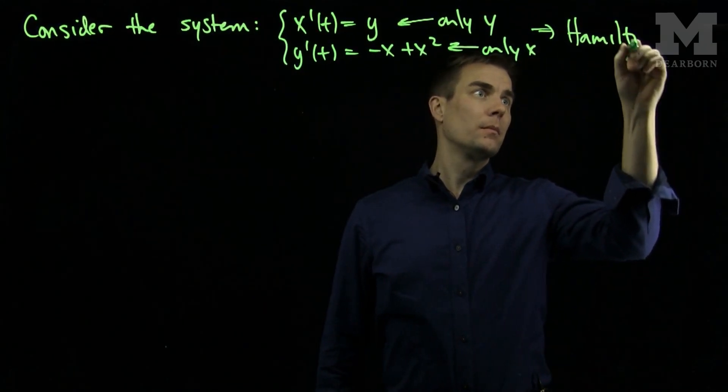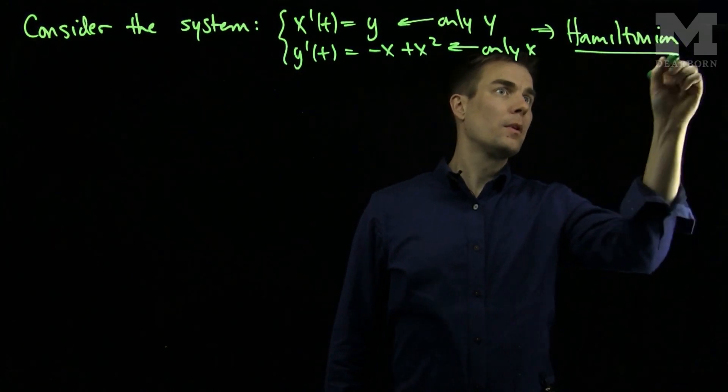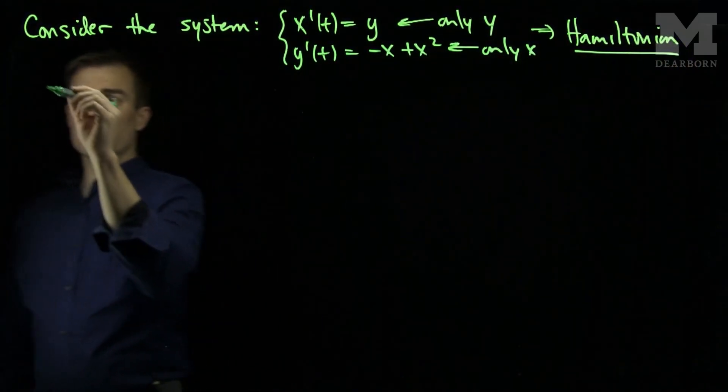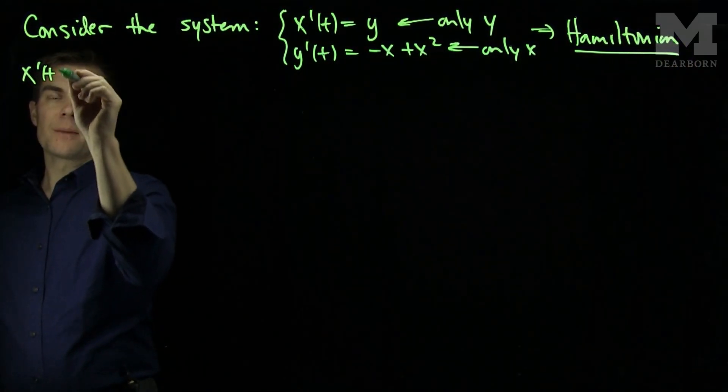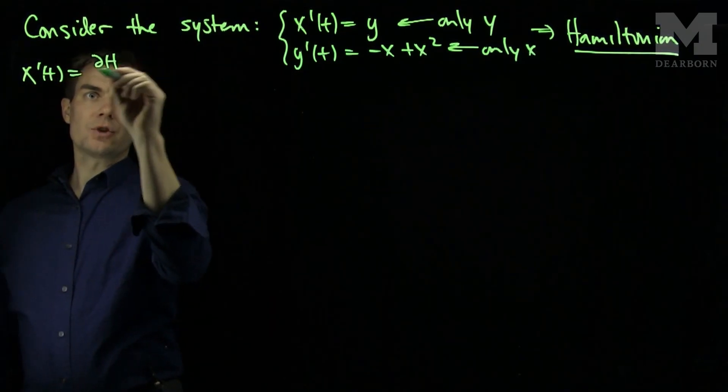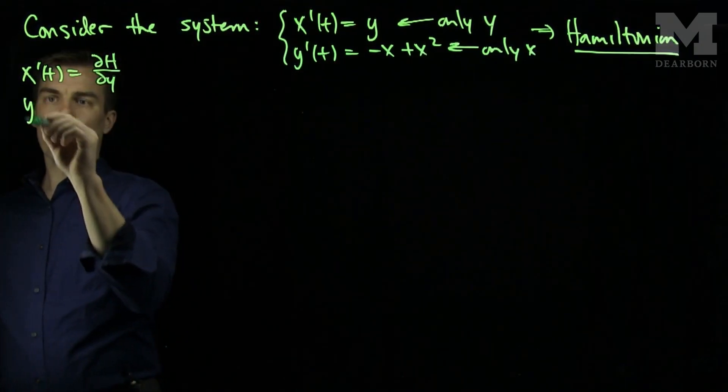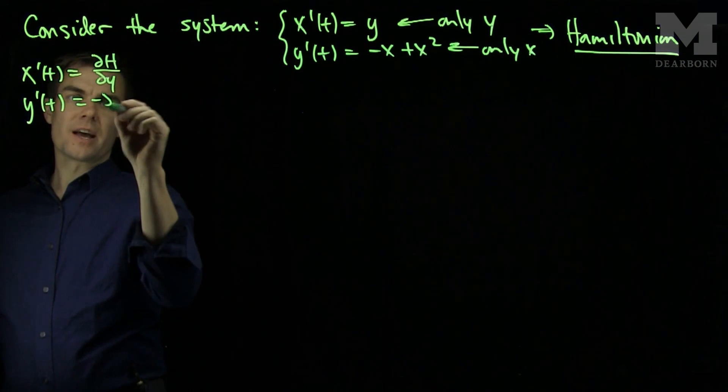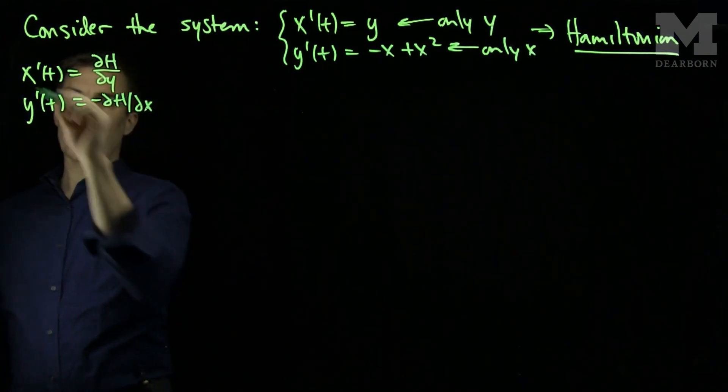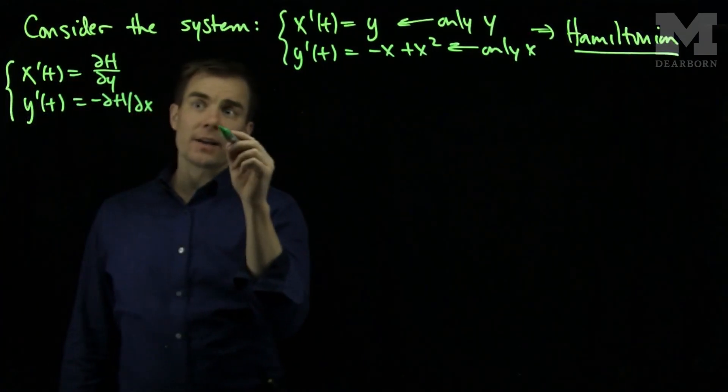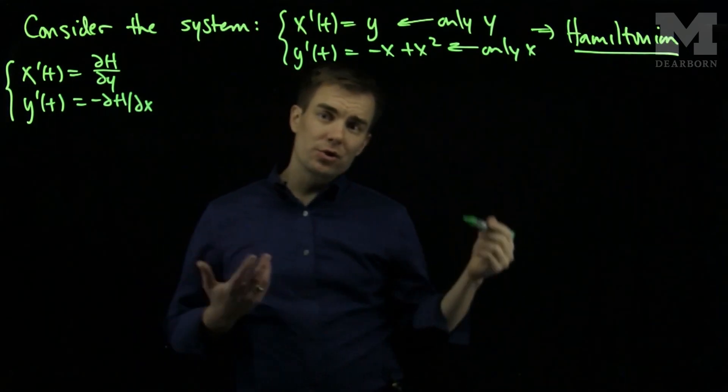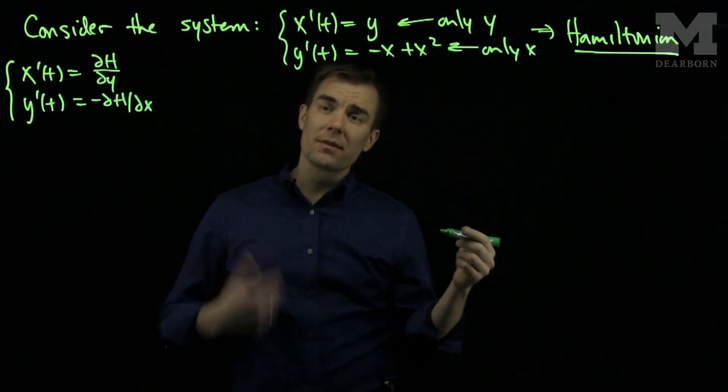This means that our system can be written in the following form: x'(t) = ∂H/∂y and y'(t) = -∂H/∂x. And for Hamiltonian systems, the trajectories of our system lie in the level sets of H.